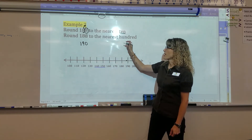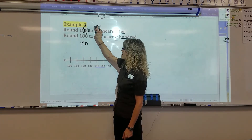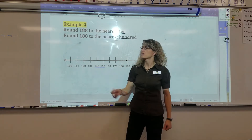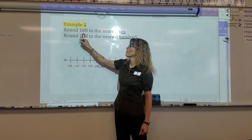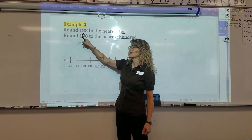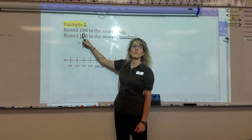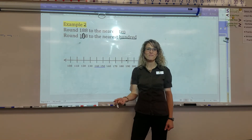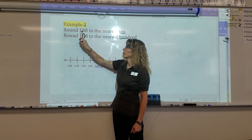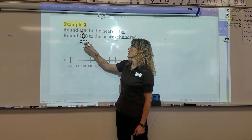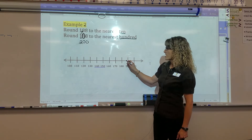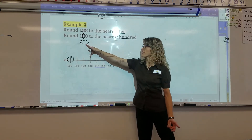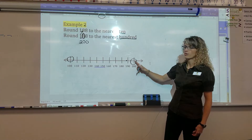Now the next question says round it to the nearest hundred. So let's look at the hundreds place. The hundreds place is where the one is. So we underline the one, we circle the one to the right, and we examine: is eight five or more, or is it four or less? It's more. So that means we're going to soar. So the one becomes a two, and the rest of the digits become zeros. Is it going to be a hundred or two hundred? It's nearest to two hundred, and that's what our rounding gives us. So 188 rounded to the nearest hundred is 200.